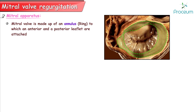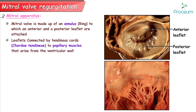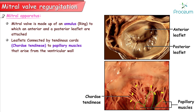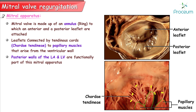The mitral apparatus. The mitral valve is made up of an annulus or ring to which an anterior and a posterior leaflet are attached. These are connected by tendinous cords called the chordae tendineae to papillary muscles that arise from the ventricular wall. The posterior walls of the left atrium and left ventricle are functionally part of this mitral apparatus.